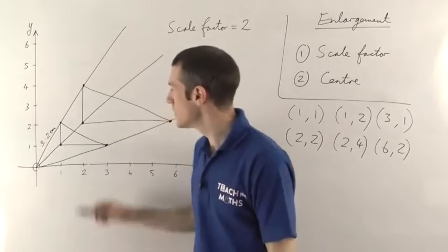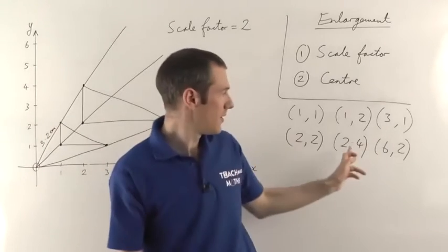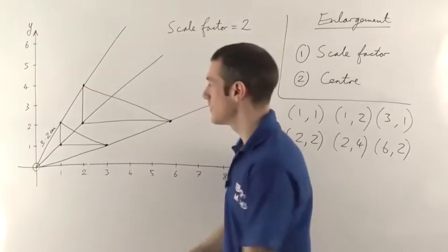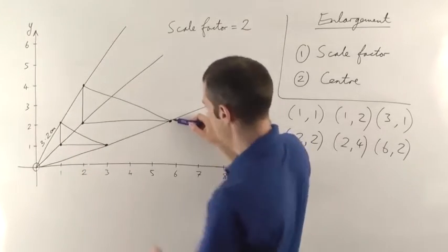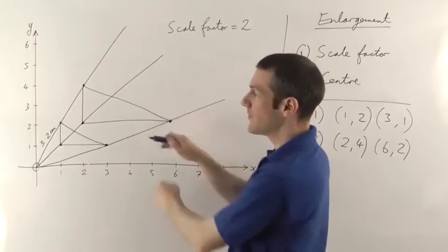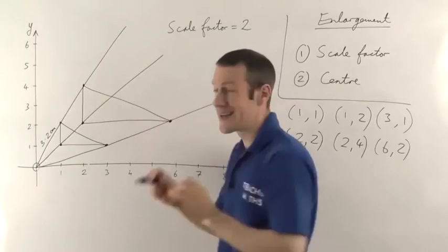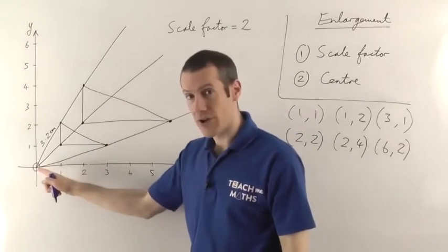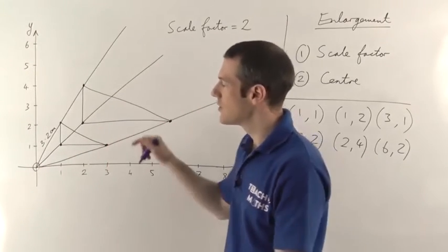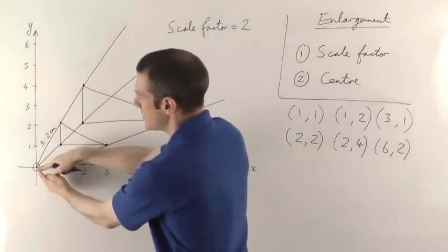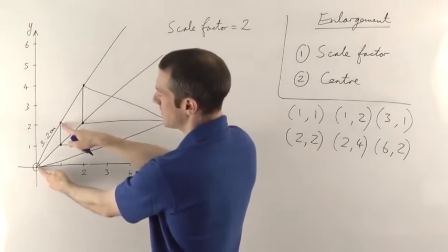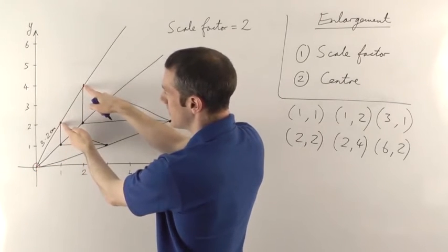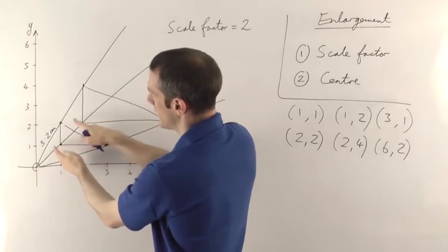If you've done this accurately, you'll find the coordinates will be exactly the same as if you'd used the other method. So the first point should be at (2,2), the next at (2,4), and then (6,2). That gives you your three points, and you join them up to make your new enlarged triangle. Obviously if you do this on graph paper you can make it very accurate. That's the method you need to use if the centre is not the origin — draw lines through each corner, measure the distance to each corner, then multiply by the scale factor.